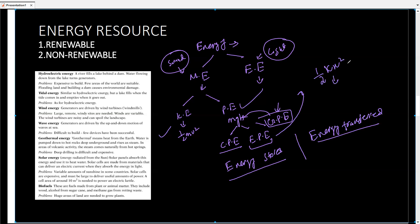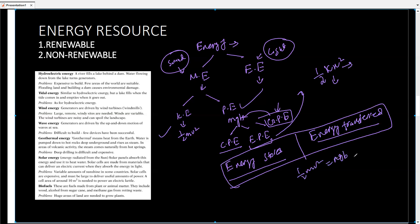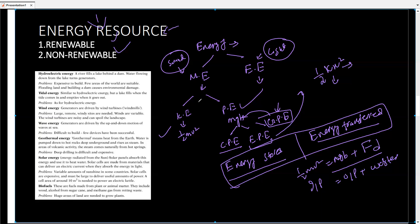Next, we covered energy conservation: energy cannot be created or destroyed, only converted from one form to another. The formula is ½mv² = mgh; if work against friction is present, we add it so that input = output + waste energy. We discussed efficiency, renewable and non-renewable energy resources, which factors to consider when selecting an energy resource, and how most energy resources depend on the sun. The next topic will be work and power, along with exam-style questions.